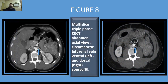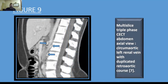Through a thorough review of literature on other renal vein variations, we can see here the circumaortic left renal vein, with the ventral course on the left and the dorsal course on the right. Another renal vein variation on sagittal view is the left renal vein with duplicated retroaortic courses, and this is the circumaortic left renal vein.